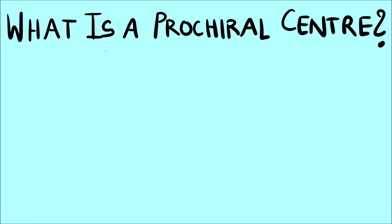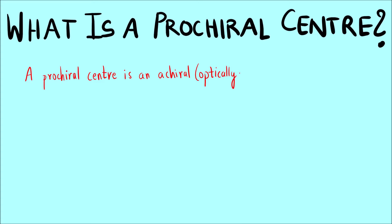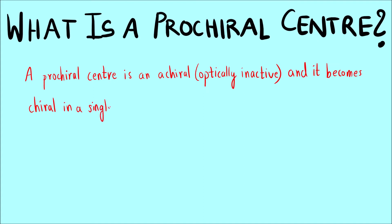First, let us understand what is a prochiral center. A prochiral center is an achiral center — achiral means optically inactive — and it becomes chiral in a single step of a chemical reaction.